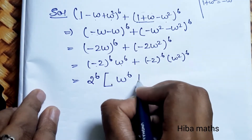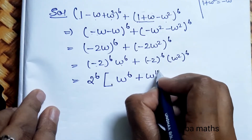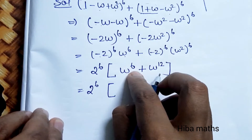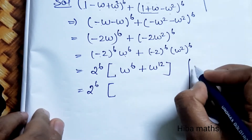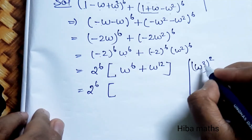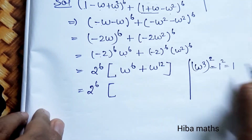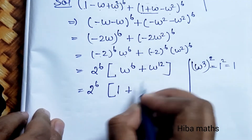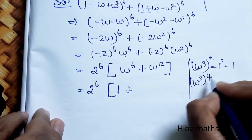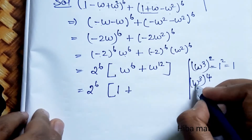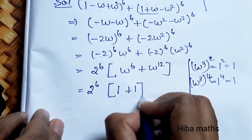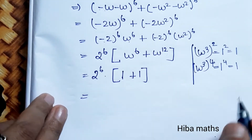Now we simplify ω^6 and ω^12. For ω^6: since ω³ = 1, ω^6 = (ω³)² = 1² = 1. For ω^12: ω^12 = (ω³)^4 = 1^4 = 1. So we have 2^6 · (1 + 1) = 2^6 · 2.